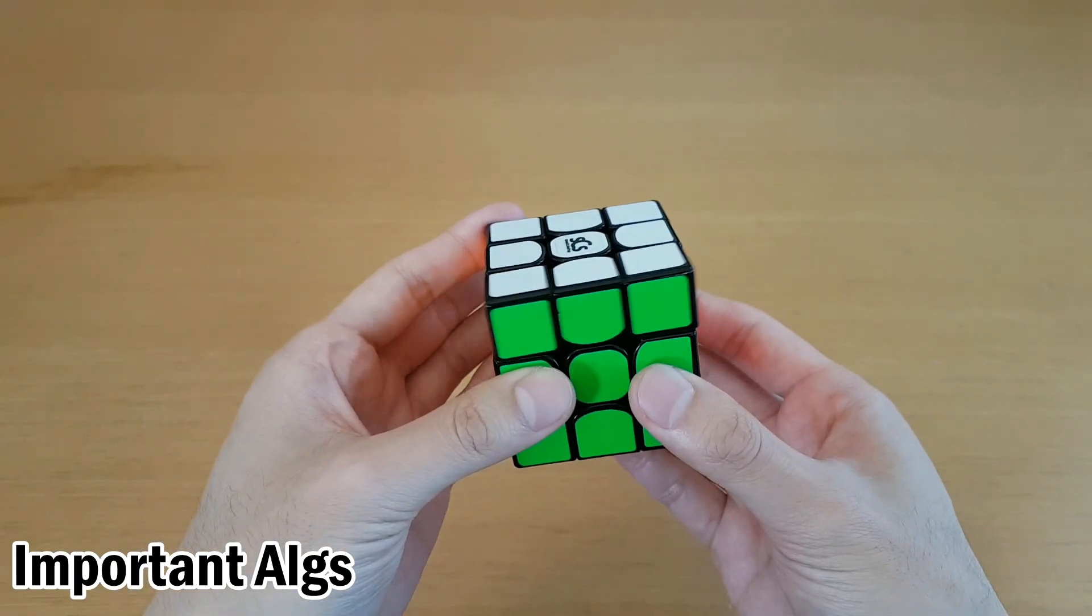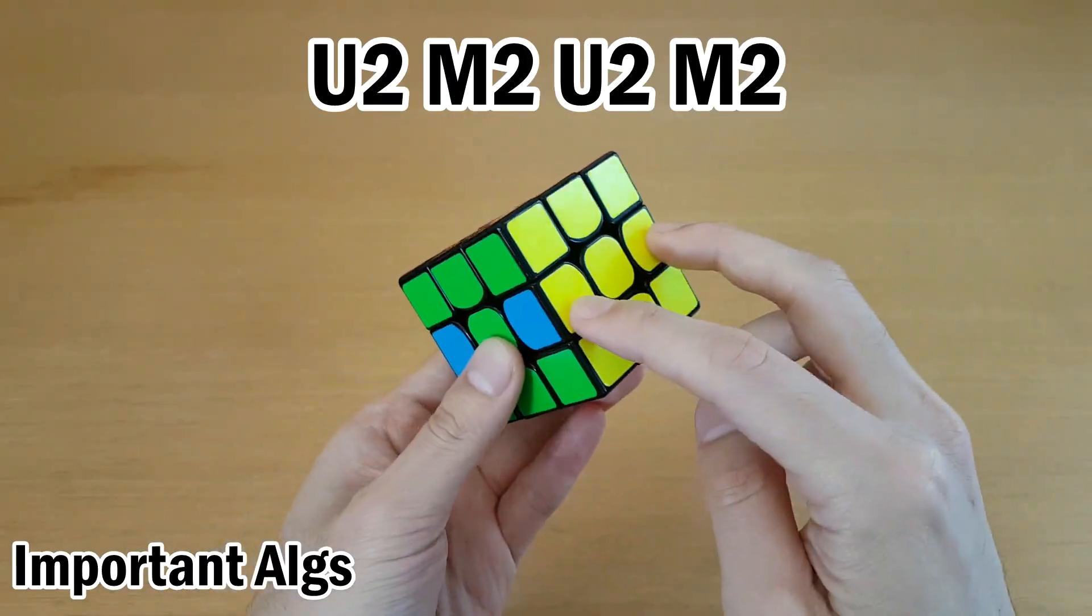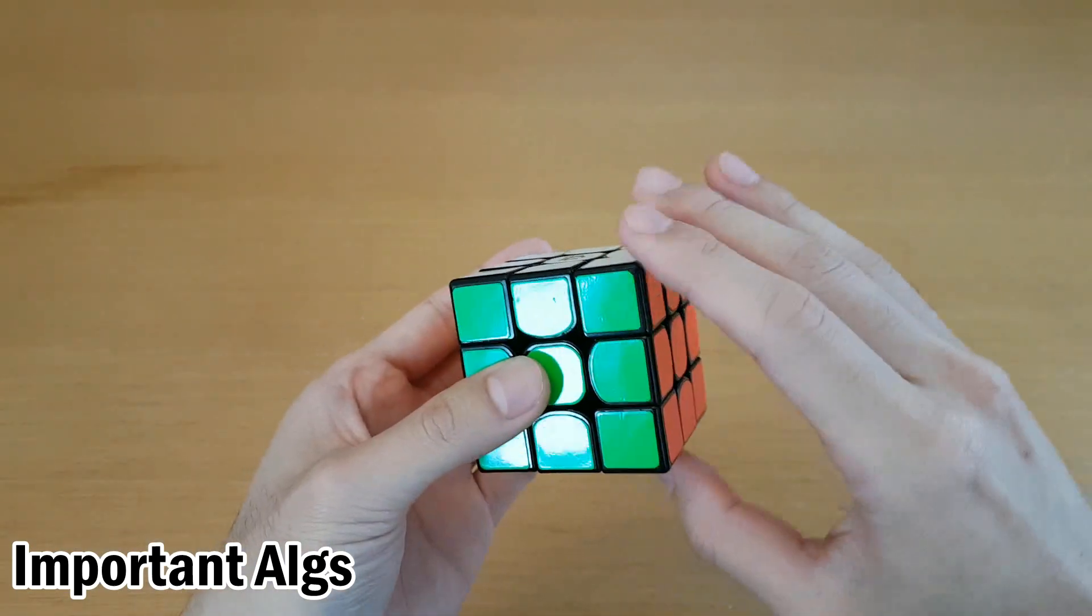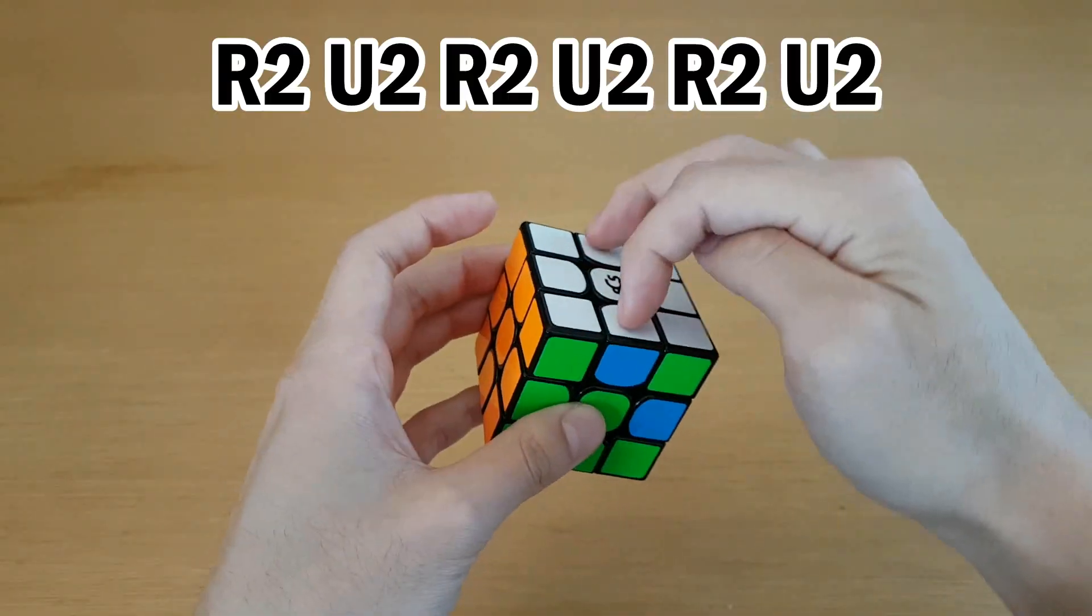And a few more edge things useful to know is U2 M2 U2 M2. And that swaps these two edges and these two edges. So if you get a skeleton that needs two edges swapped and two edges swapped, you can try this. And similarly, also six moves is R2 U2 R2 U2 R2 U2. And that swaps these two edges and these two edges.